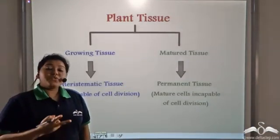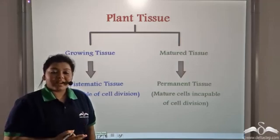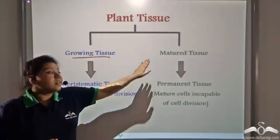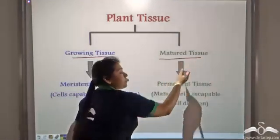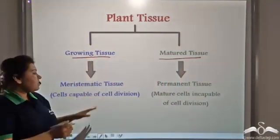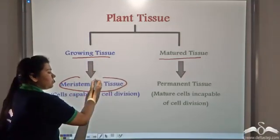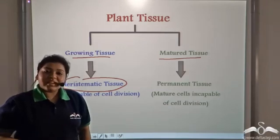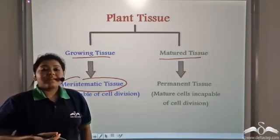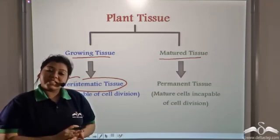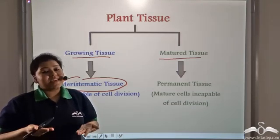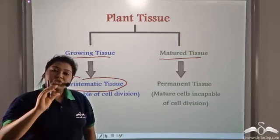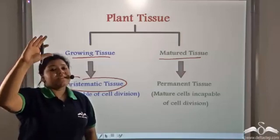So there are two kinds of tissues in a plant — the growing tissue and the matured tissue. The growing tissue is known as the meristematic tissue, and this meristematic tissue is capable of cell division and growth. The meristematic tissue continuously divides, and the increase in cell number means growth in the plant — that is how the shoot tip increased in size.